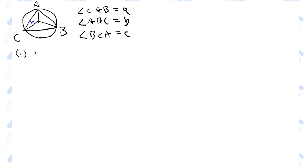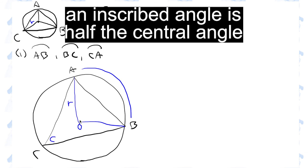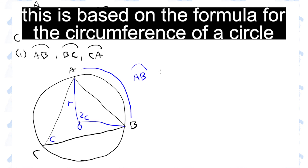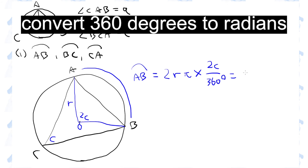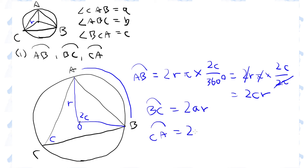For question 1, we need to express the lengths of the arcs ab, bc, and ca in terms of the angles a, b, c and the radius r. Let's draw a bigger diagram. The angle bca is c, and you should know that the angle aob is 2c. The length of arc ab is 2 times the radius times pi times 2c over 360 degrees. And since 360 degrees is 2 pi, we can simplify to get 2cr. Similarly, the length of arc bc must be 2ar, and ca must be 2br.